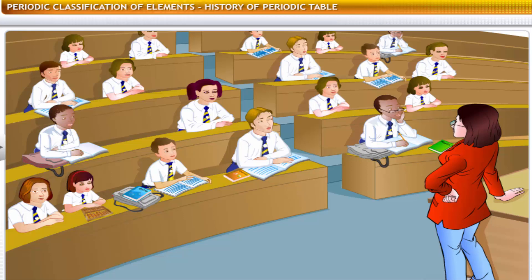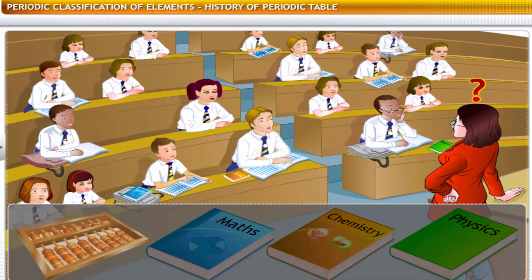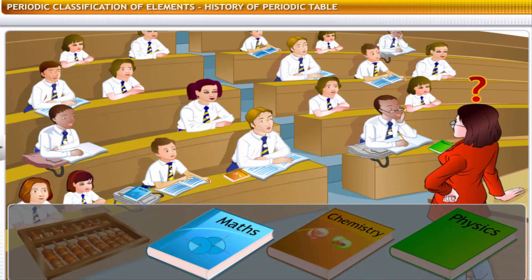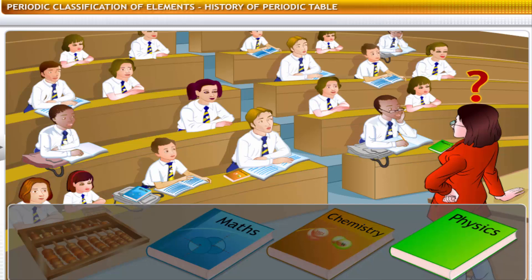Imagine how difficult it would be for a teacher if she had students of five different age groups in the same class. Trying to teach different subjects and handle different levels of complexity for each student would result in a lot of confusion.